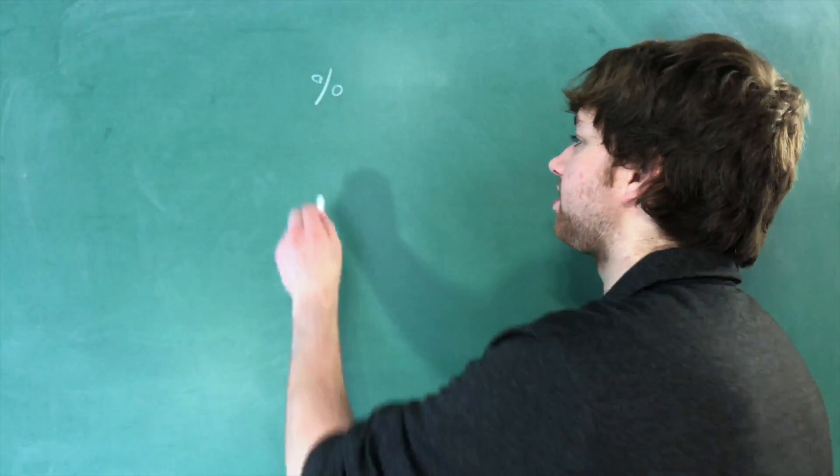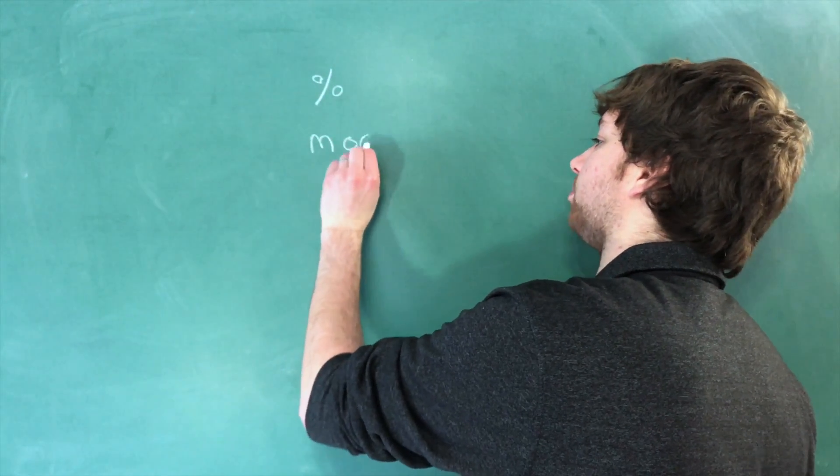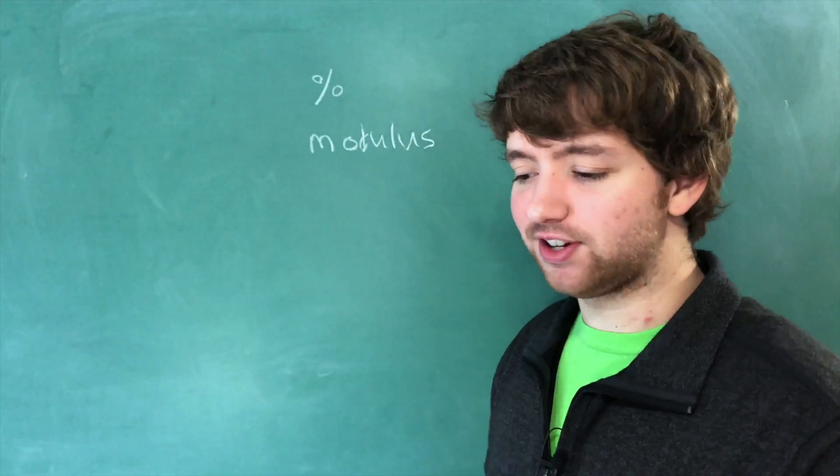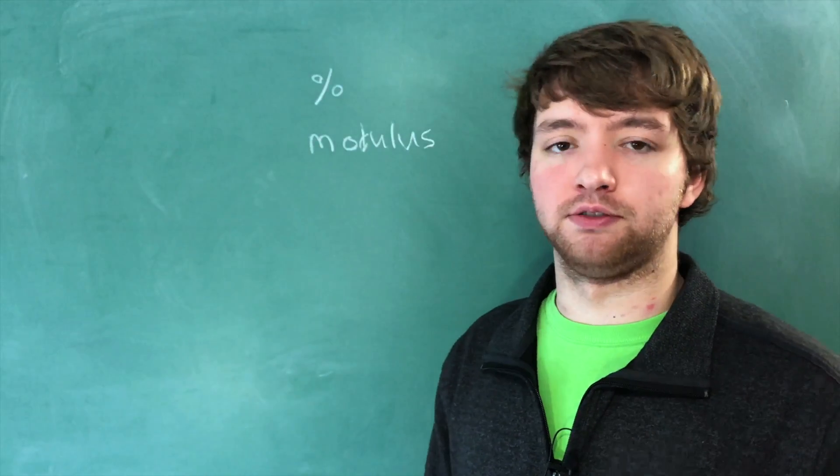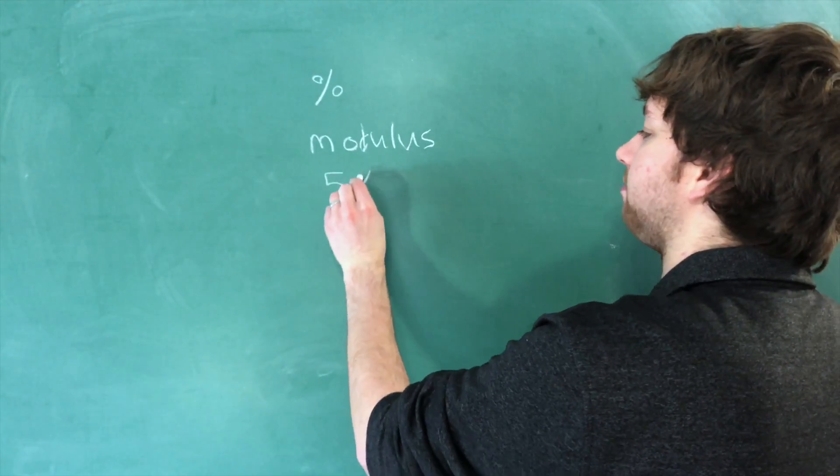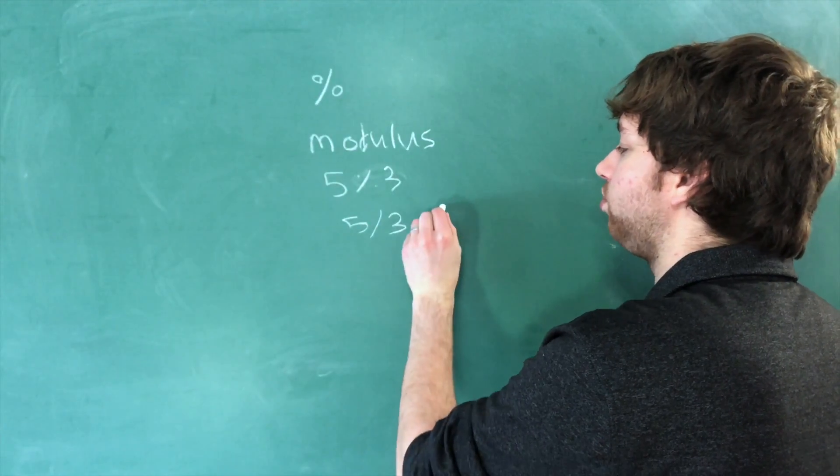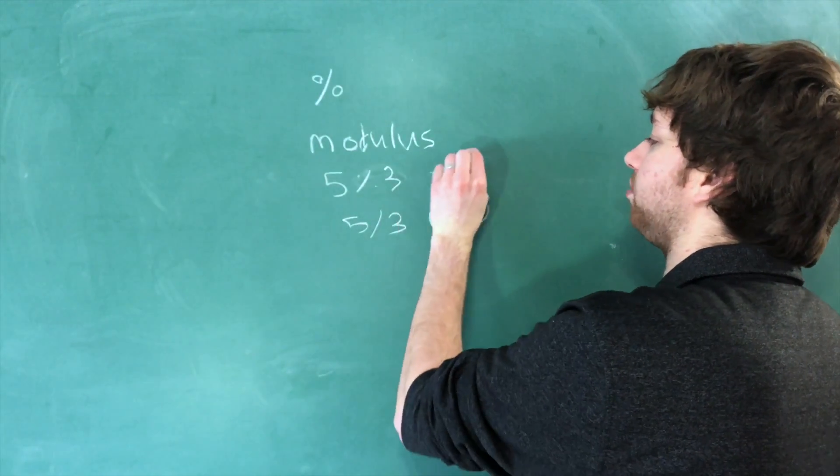The answer is that this is known as the modulus operator and it does so many magical things, but at the foundation it gives you the remainder of some division. So if you take 5 modulus 3, that's like doing 5 divided by 3 and you get 2 left over, so the answer would be 2.